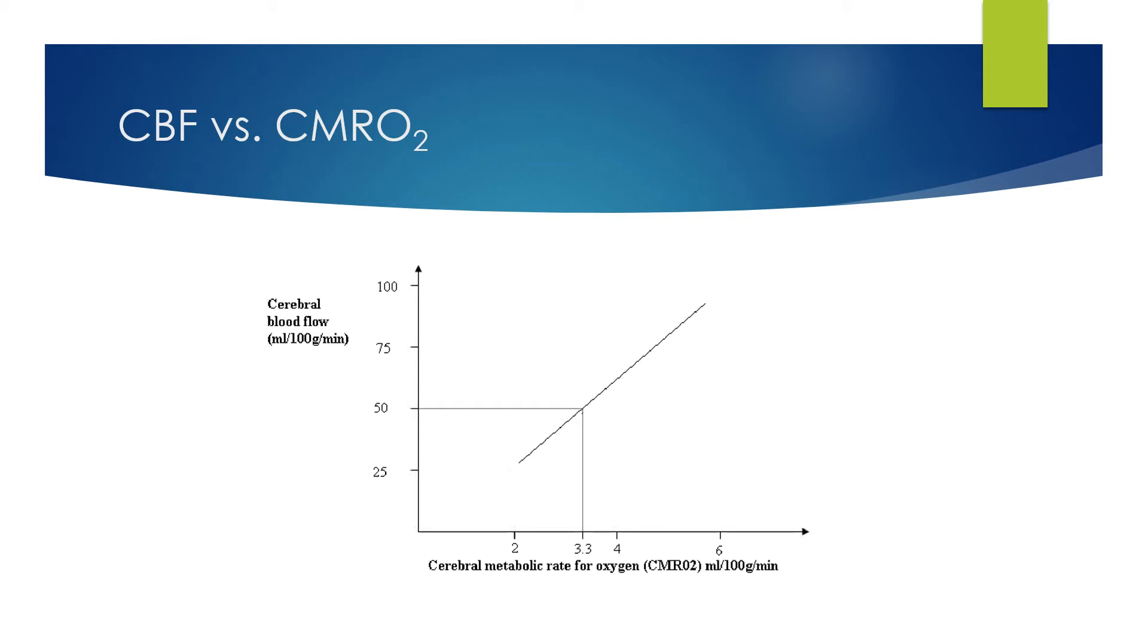But you can see if the brain is needing more oxygen for any particular reason, such as for example seizures, cerebral blood flow increases to deliver that extra oxygen to the brain. Likewise, if the cerebral metabolic rate for oxygen decreases, such as under anesthesia or deep sedation, the cerebral blood flow will reduce in kind.